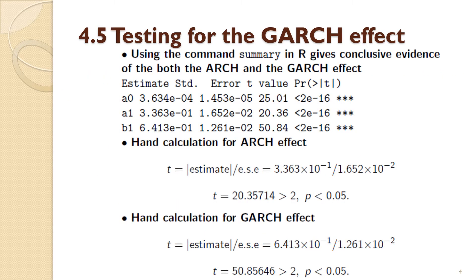For the GARCH11 model, the equivalent set of results from the summary command shows that the a1 term is the ARCH1 term and the b1 term is the GARCH1 term — both of these are significant. If you have a suitably low ARCH or GARCH order, these terms are going to be highly significant. The a1 term is significant precisely because the p-value is less than 2 times 10 to the minus 16, accompanied by three asterisks. For the GARCH1 term b1, the p-value is also less than 2 times 10 to the minus 16 — significant evidence for both the ARCH and GARCH effect.